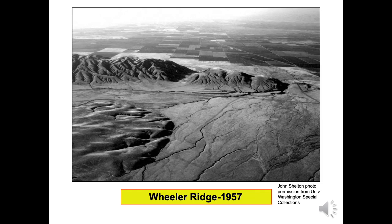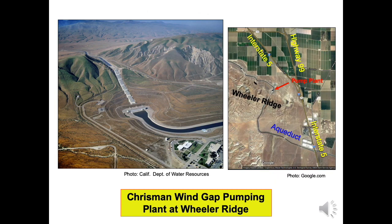Wheeler Ridge continues to rise one to two inches every 10 years. The wind gap in Wheeler Ridge gave builders of the California Aqueduct an opportunity. Pipes now transport water uphill to the south, opposite to the creek flow direction. After climbing 518 feet, aqueduct water flows via gravity to the Edmonston station. The photos show aerial and satellite views of the plant and aqueduct. The Wheeler Ridge aqueduct incline is easily visible from two freeways, Interstate 5 and Highway 99.